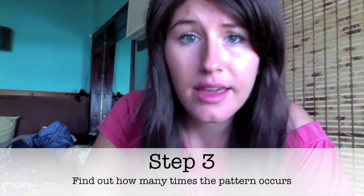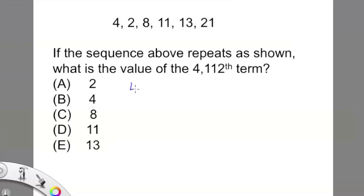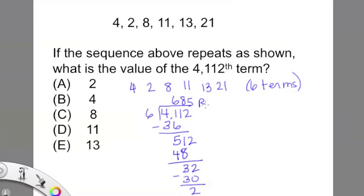Step number three is to figure out how many times the pattern occurs. Now we've got some work to do. To figure out how many times the pattern occurs in the number of terms requested, we've got to do some long division. We have six terms, and we're going to divide 4,112 by 6. How many times does 6 go into 41? Six times, which gives us 36. We subtract and get 512. How many times does 6 go into 51? Eight times, so 48. Subtract from 512, we get 32 left over. 6 goes into 32 five times, and we get a remainder of 2.